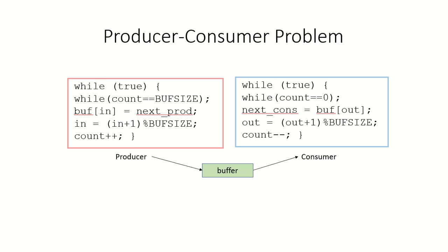We have seen earlier that processes may communicate with each other when they are sharing information or data. One such example is the producer-consumer problem. We have a producer process which is producing some information and storing it in a buffer, and a consumer process which accesses the data produced by the producer and uses it.